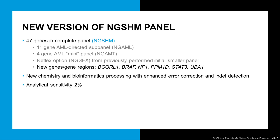The new genes and gene regions on the updated version include the BCORL1 gene. Both BCOR and BCORL1 have increasingly been shown to associate with adverse prognostic outcome in acute myeloid leukemia and other myeloid neoplasms. We felt it was important to include the counterpart to BCOR, which is BCORL1, and so that will be a new addition.